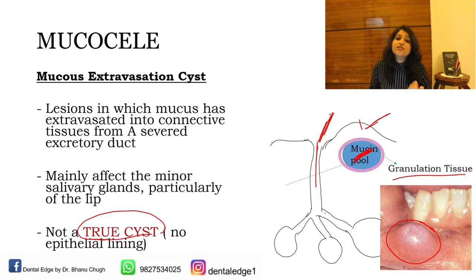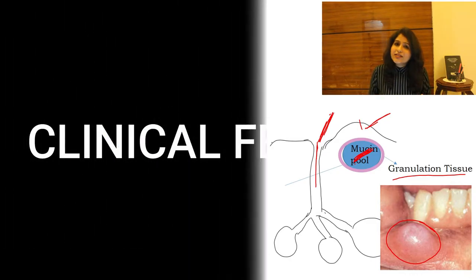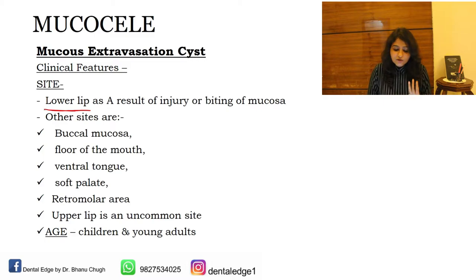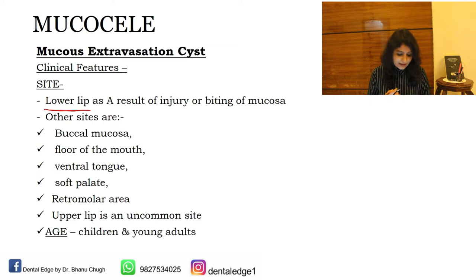This mucus extravasation cyst mainly affects the minor salivary glands, and the lower lip is the most common site — as a result of injury or biting of the mucosa. Other sites include the buccal mucosa, floor of mouth, ventral tongue, soft palate, and retromolar area.